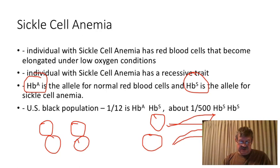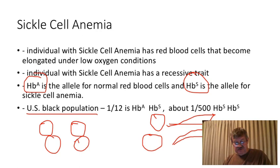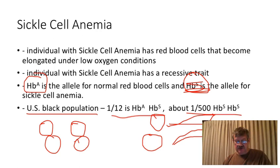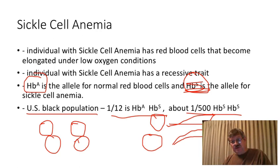In the United States, sickle cell is primarily seen in the African American population. The origin of the HbS allele traces back to West Africa, where in some regions the occurrence of sickle cell and carriers is even higher than in the African American population here. In the US, one person in 12 within this population is a carrier, and approximately one in 500 actually has the disease — the highest rate of occurrence of any severe genetic disease.